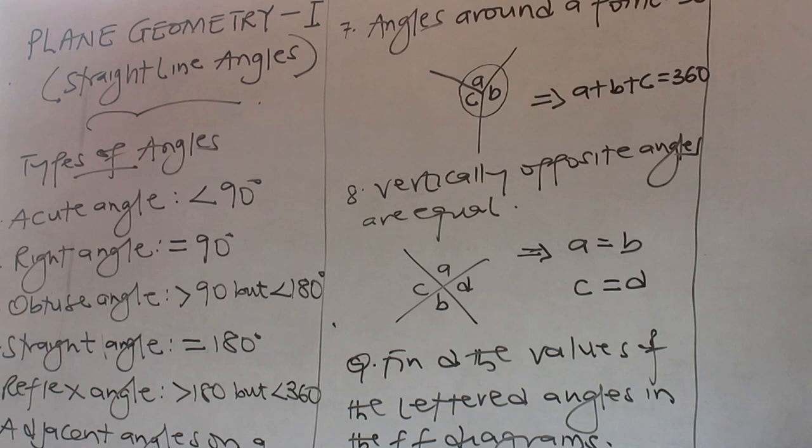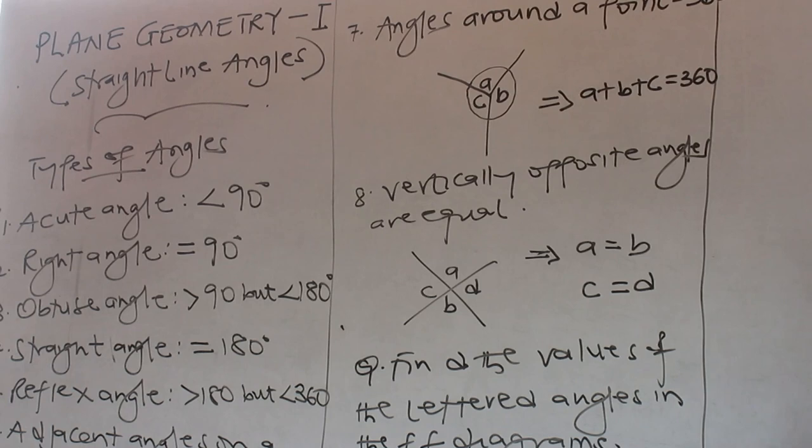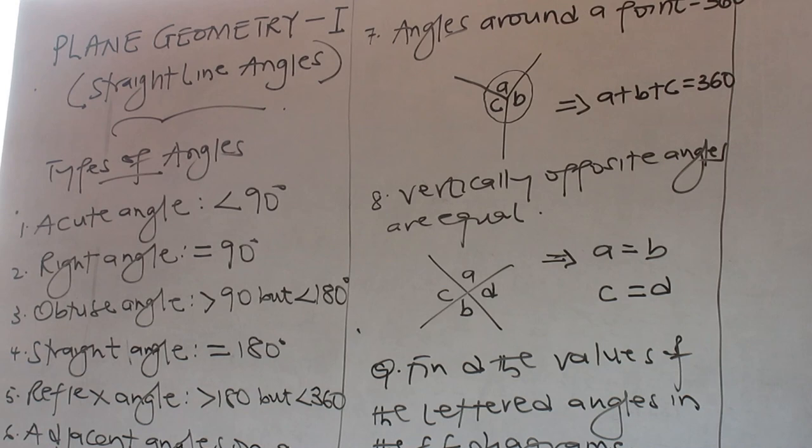Types of angles: acute angle is less than 90 degrees, right angle equals 90 degrees, obtuse angle is greater than 90 but less than 180, straight line angle equals 180 degrees, reflex angle is greater than 180 but less than 360 degrees.